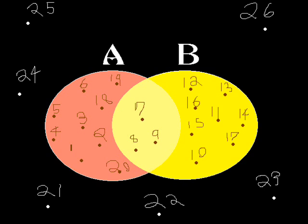You have three points that are members of both sets A and B. That means they could be categorized into either group.